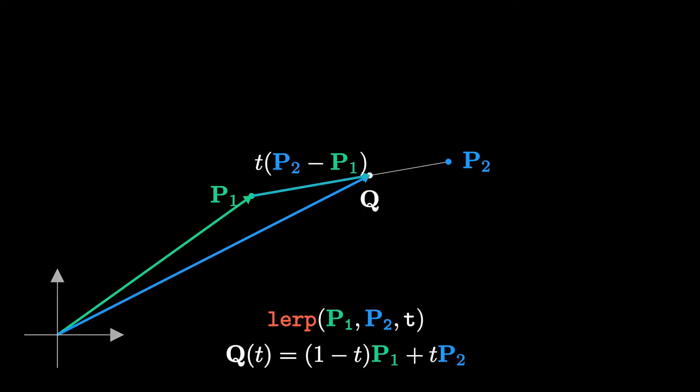Once we understand what lerp is, we can add an extra point, which we will call P3. Now, using the same parameter t, we are going to define two points. One point will be between P1 and P2, and the other will be between P2 and P3.